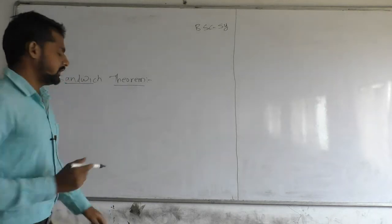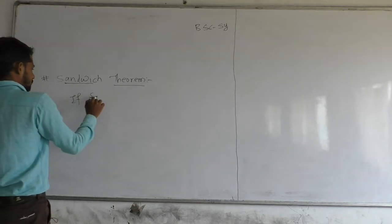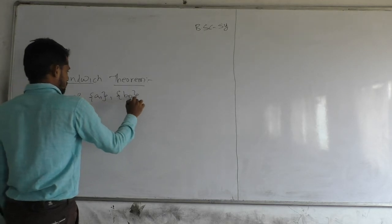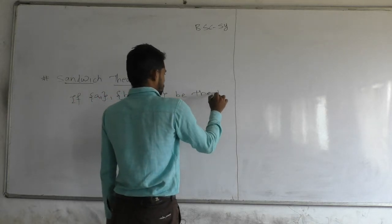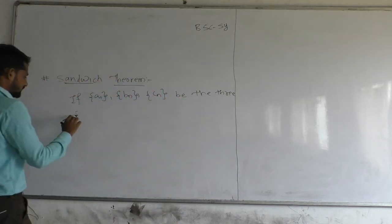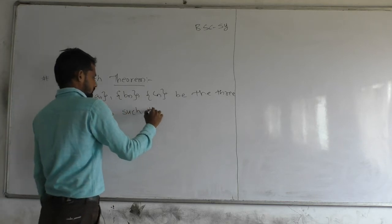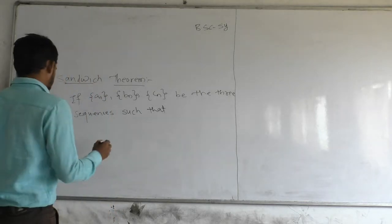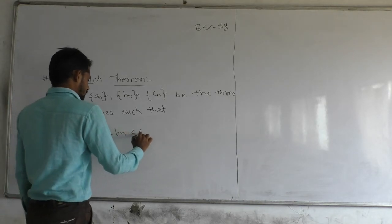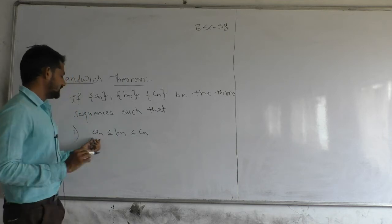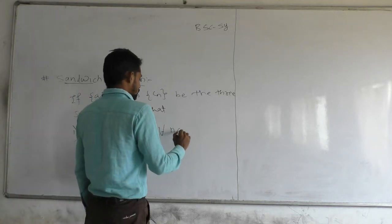Statement of the theorem: If A_N, B_N, and C_N are three sequences such that A_N is less than or equal to B_N, and B_N is less than or equal to C_N — that is, the Nth term of sequence A is less than or equal to the Nth term of sequence B, which is less than or equal to the Nth term of C_N, for all N.